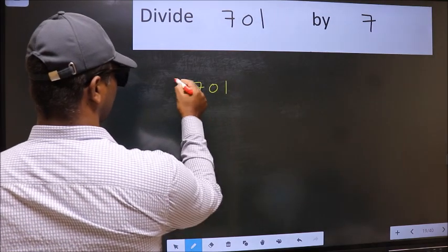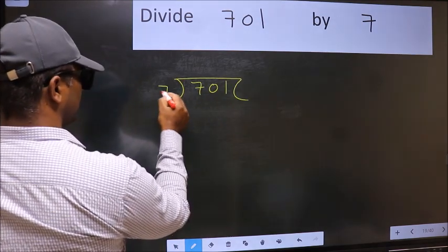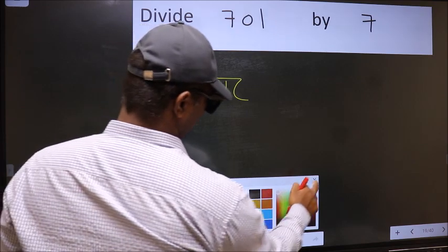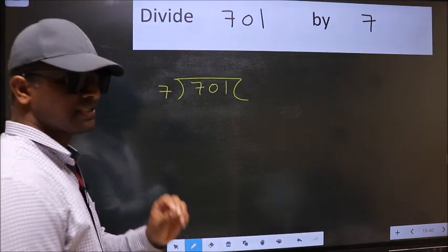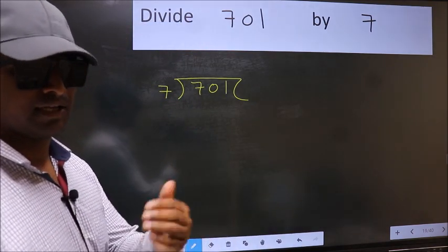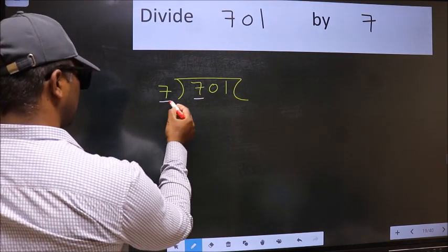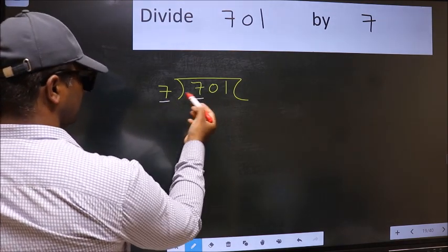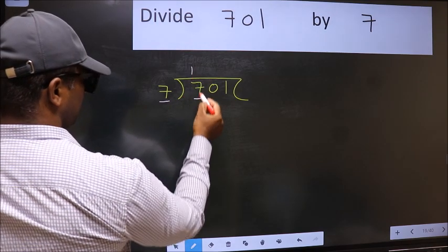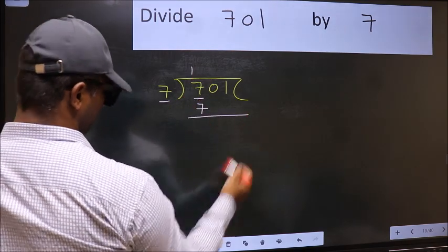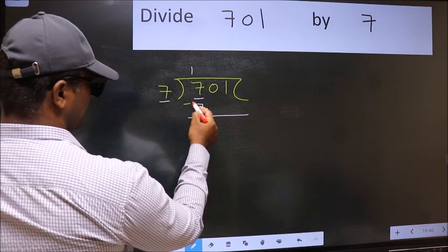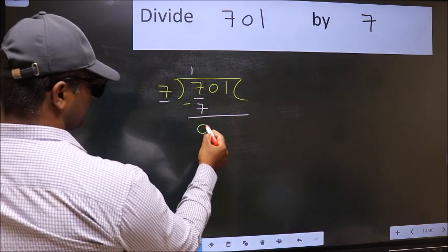701 and 7 here. This is your step 1. Next, here we have 7 and here also 7. When do we get 7 in the 7 table? 7 once 7. Now we should subtract. 7 minus 7, 0.